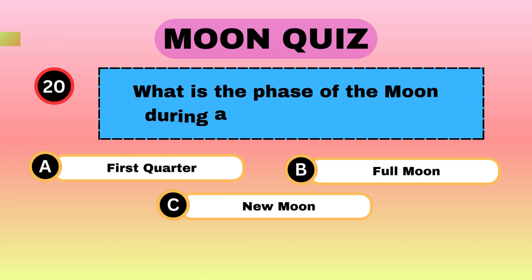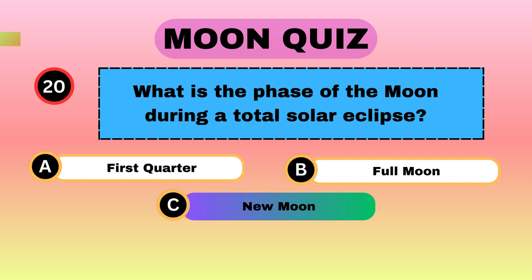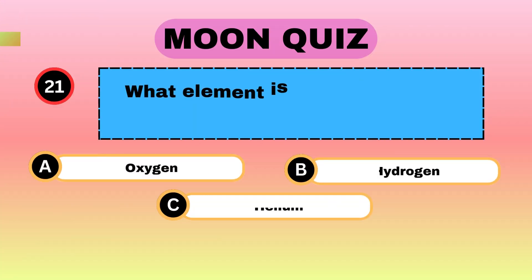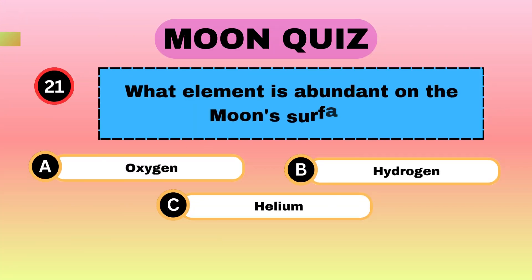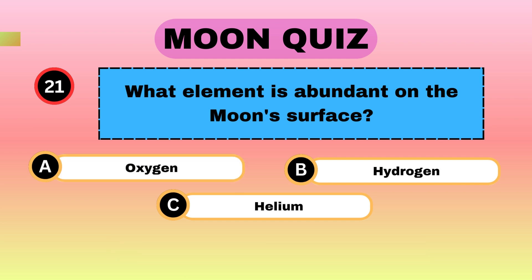What is the phase of the Moon during a total solar eclipse? New Moon. What element is abundant on the Moon's surface? Oxygen.